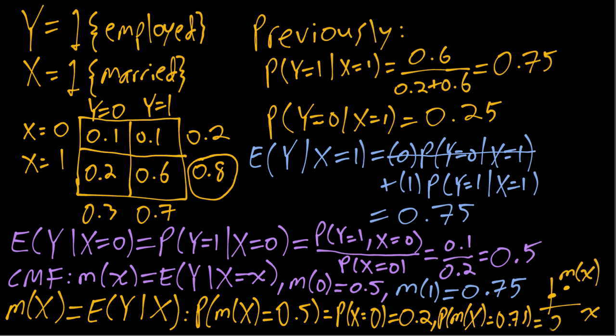All that to say, this m of X when we keep it capital X is a random variable, and we just computed its distribution, whereas m of little x is a function that is not random.